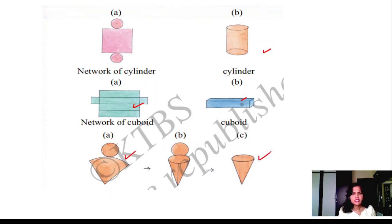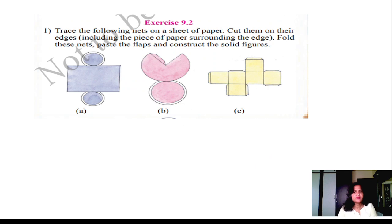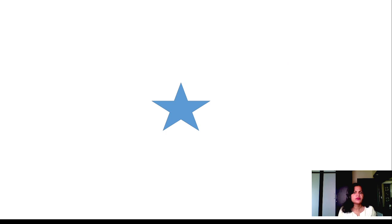Trace the following nets on the sheet of paper. Like this, you prepare and you get the cylinder, cone, and cuboid. You get these shapes. This chapter is over. Please subscribe to my channel and hit the like button and save the playlist. Thank you very much. Bye bye.